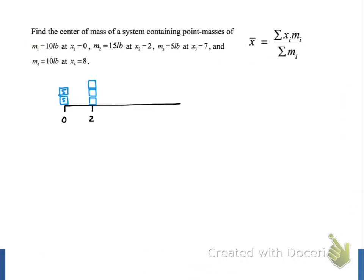Much further to the right, at x3 equals 7, we have a 5 pound point mass.